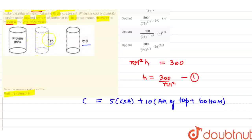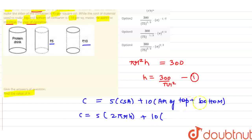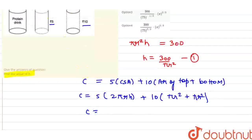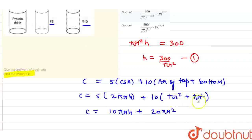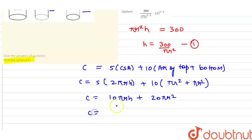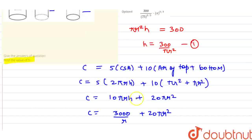We put the side cost and the top and bottom cost into the cost function. The curved surface area is 2πrh and the top and bottom area is 2πr². So the cost function becomes C = 10πrh + 20πr². Substituting h = 300/(πr²), this simplifies to C = 3000/r + 20πr².